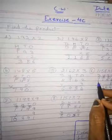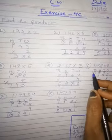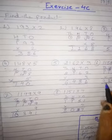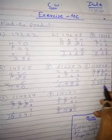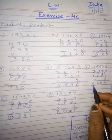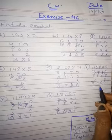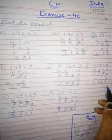8 times 1 is 8, plus 1 carry equals 9. The complete product is 9,264.